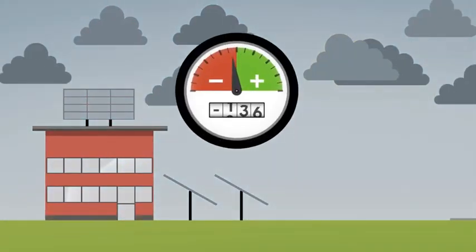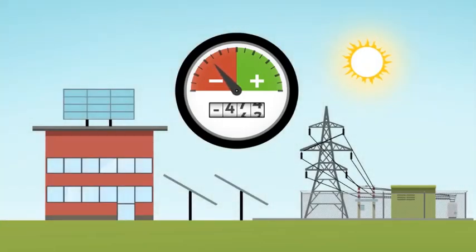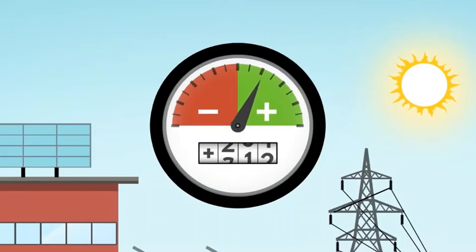When conditions are not suitable for energy generation, the building will draw energy from the electrical grid to meet its needs. When conditions improve, the on-site renewable energy systems will cover the building's energy need and send excess energy back into the grid to make up the balance. Over the course of a year, the building gives back as much energy as it takes.